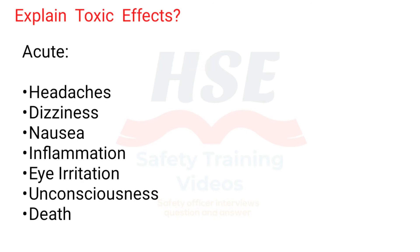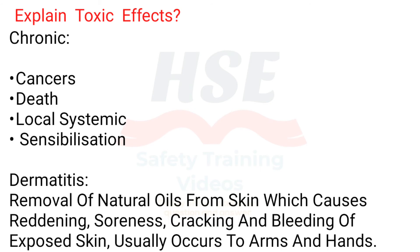Toxic effects can be acute or chronic. Acute effects include Headaches, Dizziness, Nausea, Inflammation, Irritation, Unconsciousness, and Death. Chronic effects include Cancers and Death, and can be Local or Systemic.